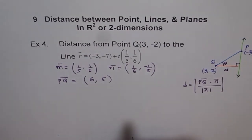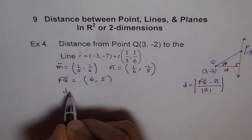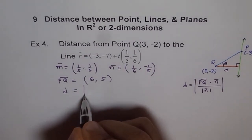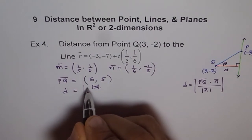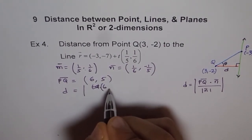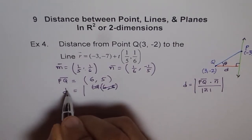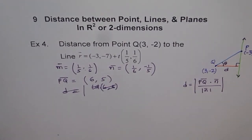So PQ for us is (6, 5), and therefore distance equals—PQ is (6, 5). Let me write again, let's redo with a different ink. Correct, so let's redo it.